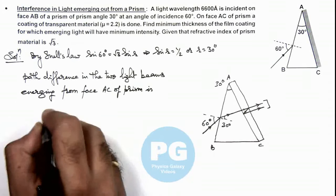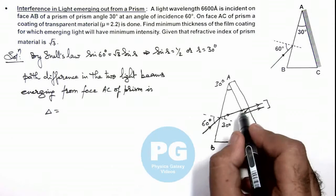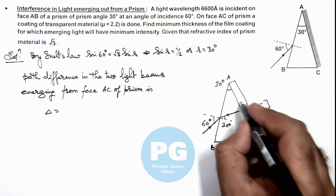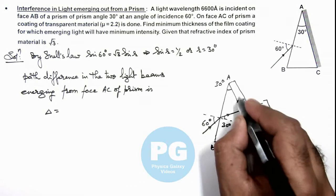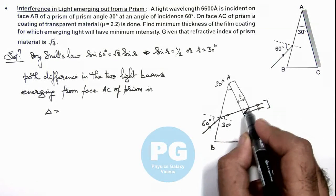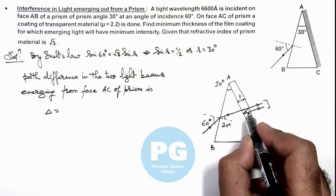This path difference we can write: one light will be passing for a thickness t, the other one is reflected back and again reflected, so it'll travel an additional path 2t.